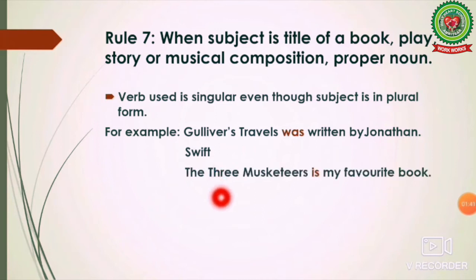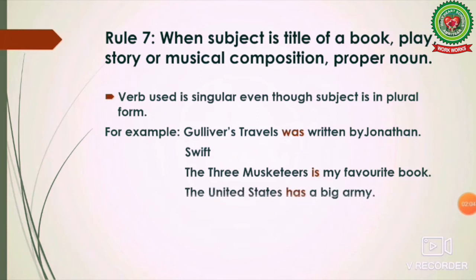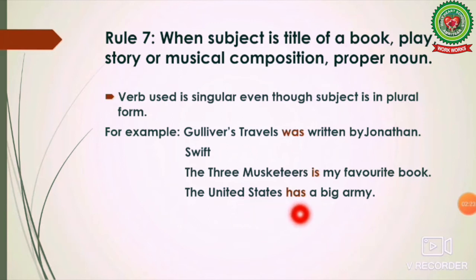'The Three Musketeers is my favorite book.' 'The Three Musketeers' is both a proper noun and a title of a book, and even though it sounds plural, it is used as a singular subject, so the singular verb 'is' is used. Similarly: 'The United States has a big army.' 'The United States' is a proper noun, always considered singular, so 'has' is used, not 'have.'